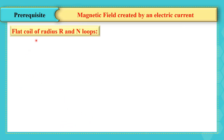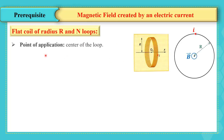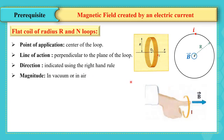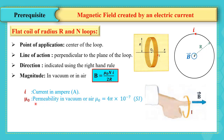In the case of a flat coil of radius R and N loops, the magnetic field created at the center has a line of action perpendicular to the plane of the loop. The direction is indicated using the right-hand rule — the thumb indicates the direction of B while the curved fingers take the direction of the current. The magnitude in vacuum or air is B = μ₀NI / (2R), where I is the current in amperes, R is the radius in meters, and N is the number of loops.